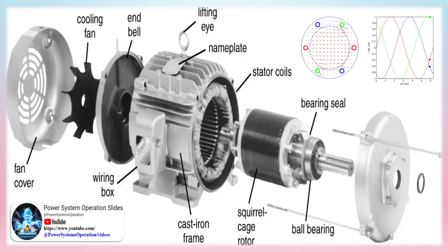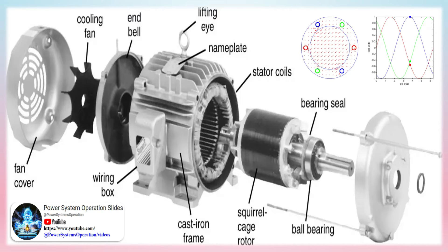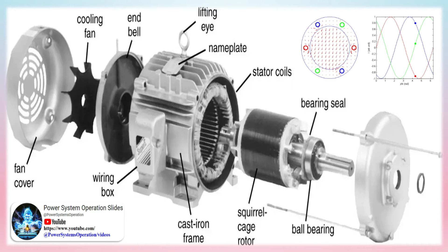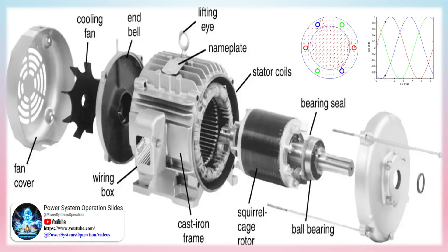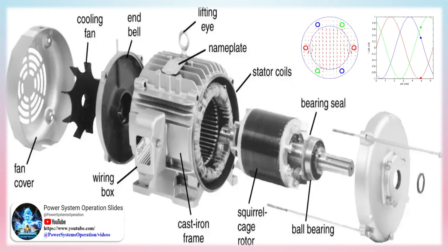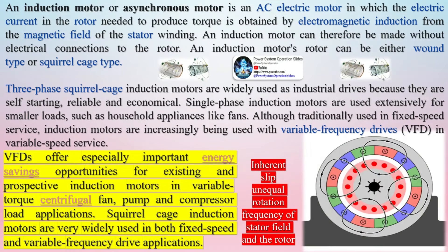The principle of operation of this motor is based on the production of a rotating magnetic field. An induction motor is an AC electric motor in which the electric current in the rotor needed to produce torque is obtained by electromagnetic induction from the magnetic field of the stator winding. An induction motor can therefore be made without electrical connections to the rotor, and its rotor can be either wound type or squirrel cage type. Three-phase squirrel cage induction motors are widely used as industrial drives because they are self-starting, reliable, and economical.